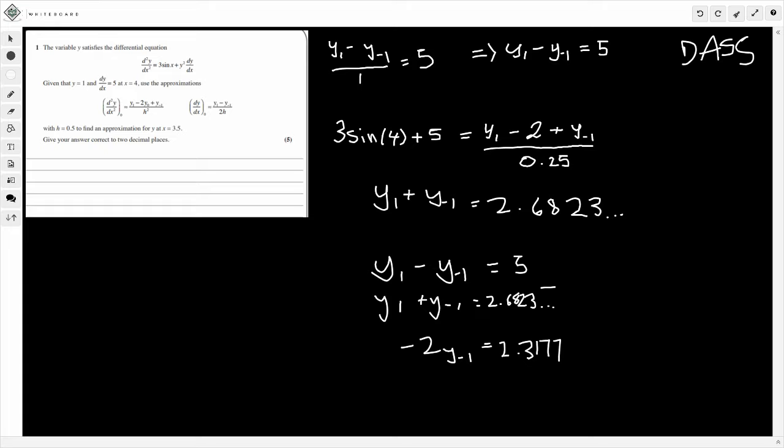And then when you go to simplify that guys, you're just going to divide through by minus 2, so therefore y minus 1 is equal to minus 1.15885, and then to 2 decimal places that's going to give you minus 1.16. And there we have it, that's question 1 done, nice and easy.